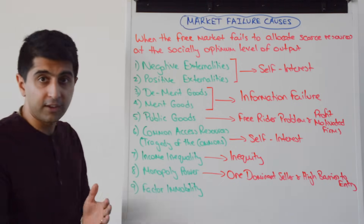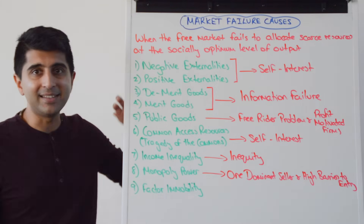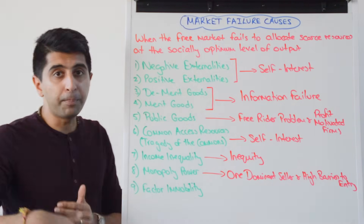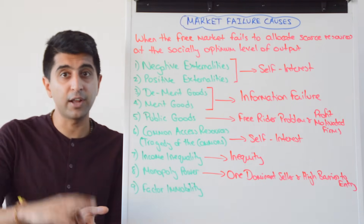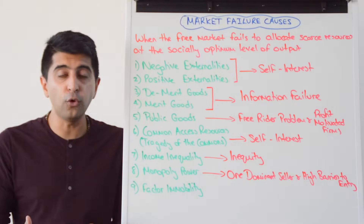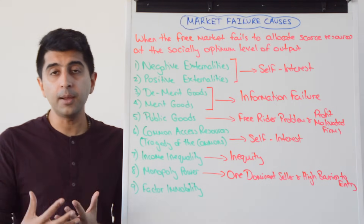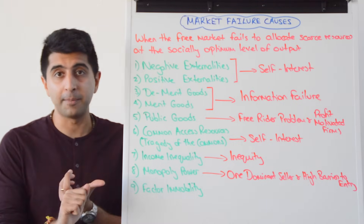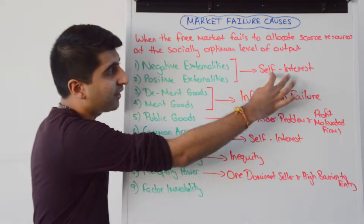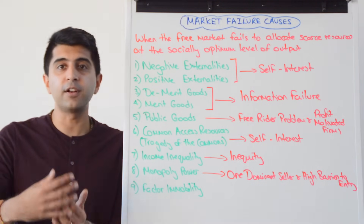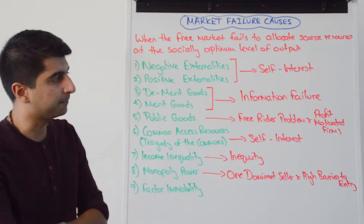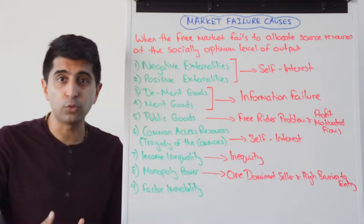There's a relatively long list of causes and you need to know all of them. We start with externalities — negative and positive. These are negative or positive impacts on third parties as a result of production or consumption. The problem is they won't be accounted for in the free market mechanism. Consumers, as utility maximizers, only consider their private benefit, and firms, as profit maximizers, only consider their private cost. That self-interest is at the heart of the problem when there are external costs or external benefits.